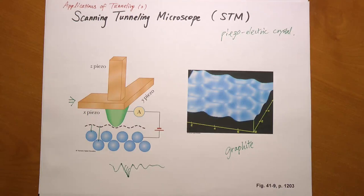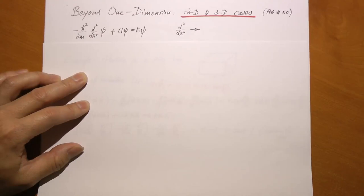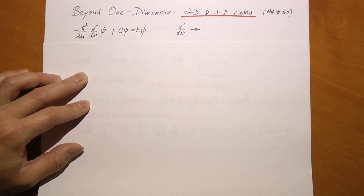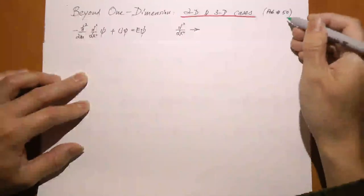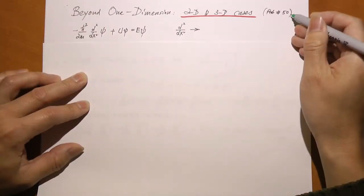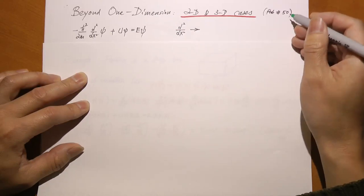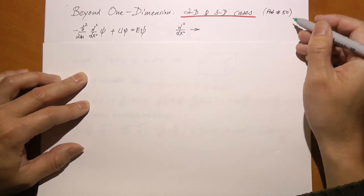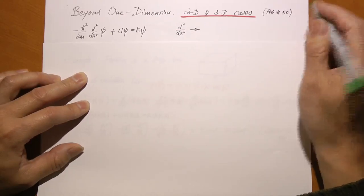So this is how scanning tunneling microscope works. As the last example of chapter 41, let's take a look at what happens when we go beyond one dimension. Here is problem number 50 in the textbook, and we use that example to show you what happens when you try to solve Schrödinger's equation beyond one dimension.